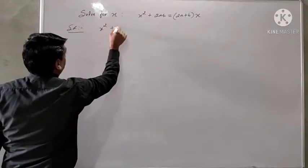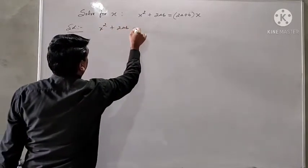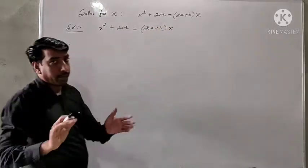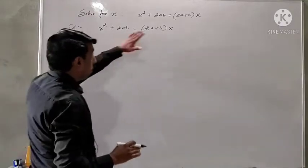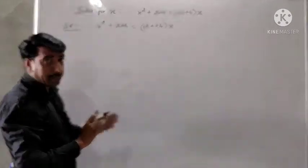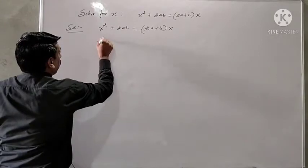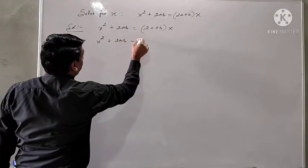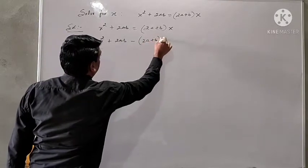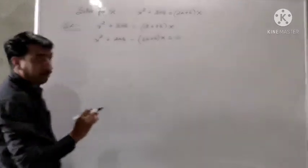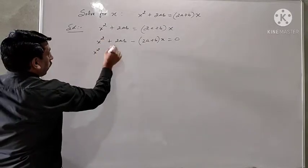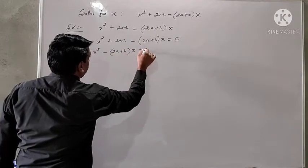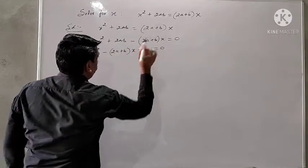x squared plus 2ab equals 2a plus bx. It is the one equation. Bringing everything on the left hand side, it will become x squared plus 2ab minus 2a plus bx equal to 0. x squared minus 2a plus b inside bracket x plus 2ab equal to 0.